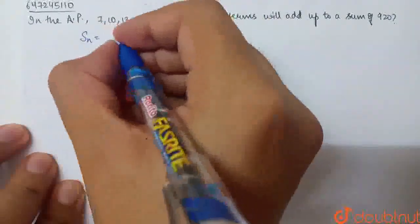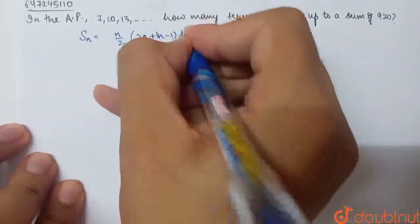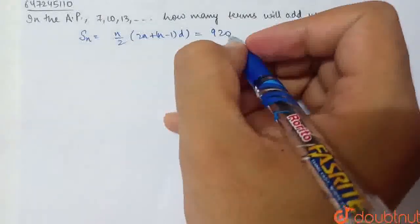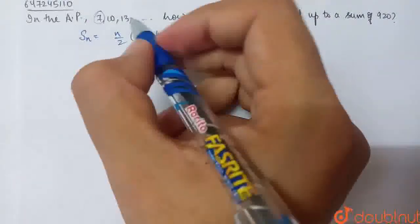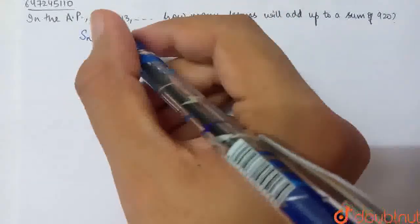Now, in AP, the sum is Sn = n/2 × (2a + (n-1)d). How many terms will make the sum of 920? I need to find n. If I look here, a is given as 7. What is the common difference? d is basically 2 consecutive terms. 10 minus 7 is 3.